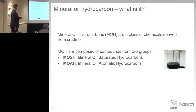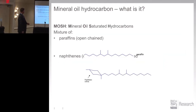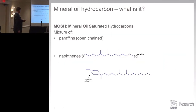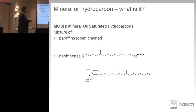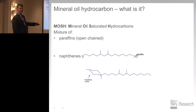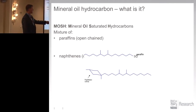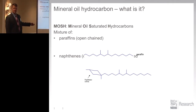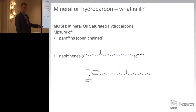MOSH — saturated hydrocarbons — includes paraffins, naphthenes, lots of different isomers, lots of different combinations, lots of different chain lengths. We just showed one example here, otherwise it would have been an eye chart.